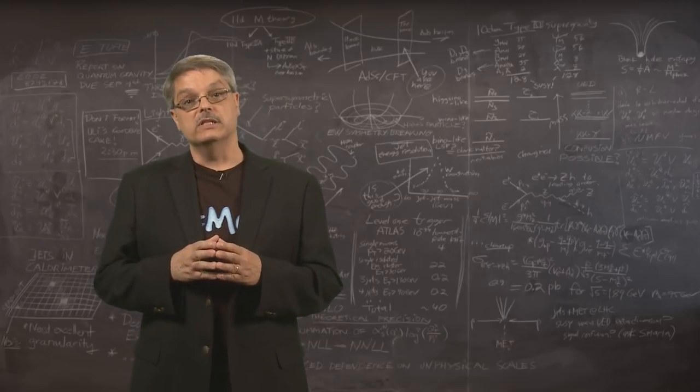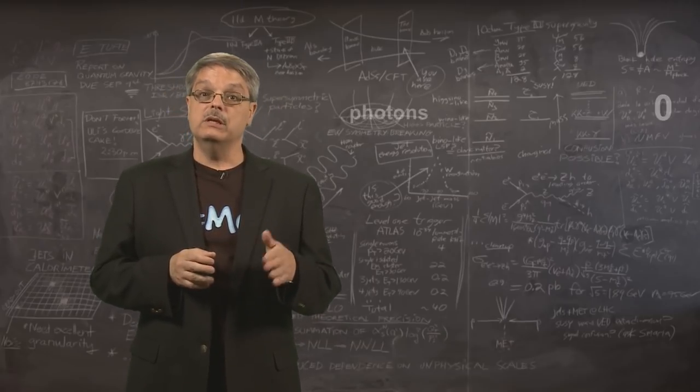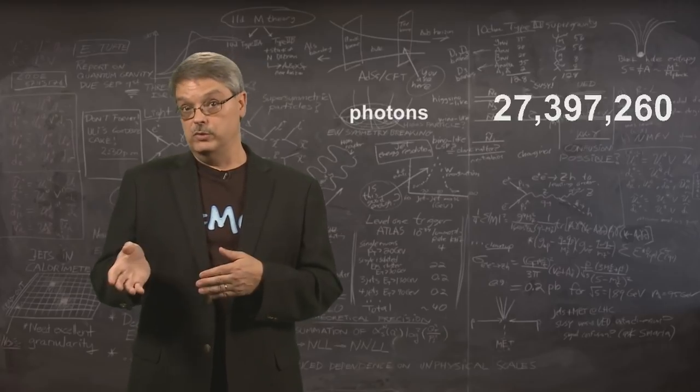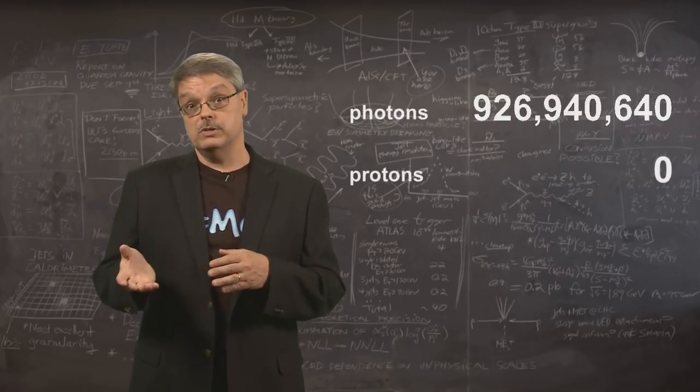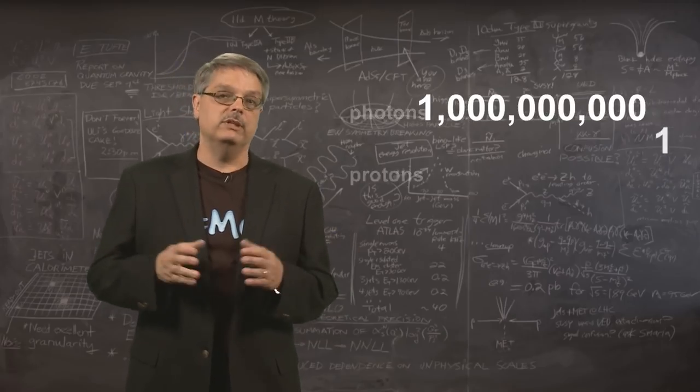There is some experimental evidence for this idea. If we count the number of energy particles in the universe, called photons, and compare them to the number of heavy matter particles, called protons, the ratio is roughly a billion to one.